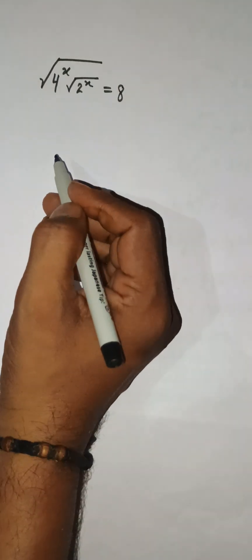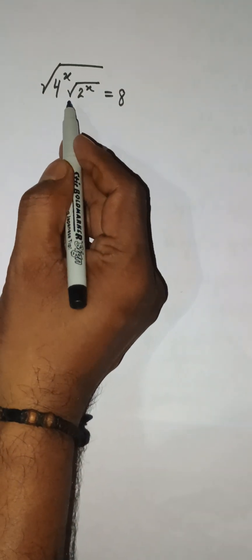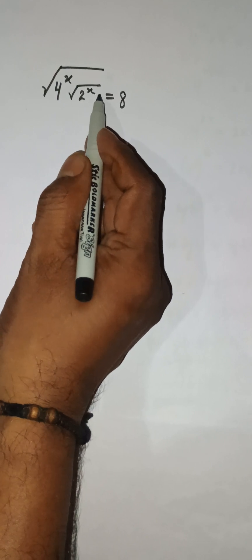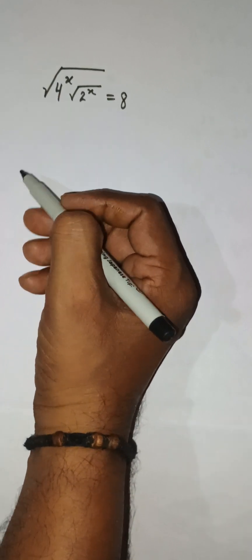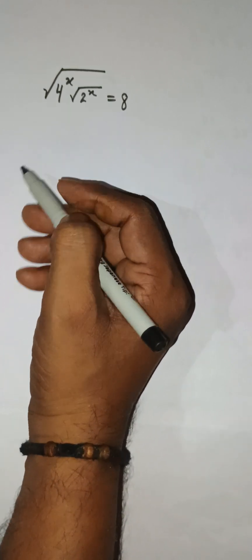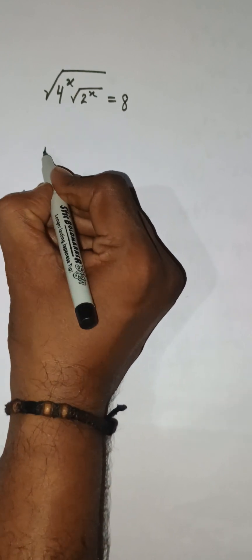Hello everyone, let's solve this problem. We have the square root of 4 to the power x times the square root of 2 to the power x equal to 8. Can you solve within 10 seconds? Let's do it.